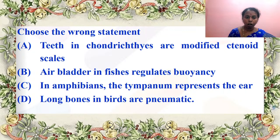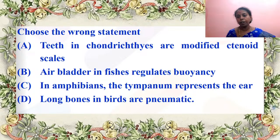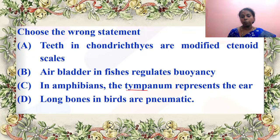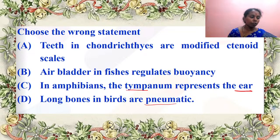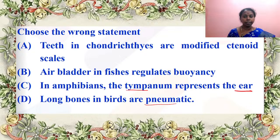Which among the following is a wrong statement? Teeth in Chondrichthyes are modified placoid scales — not tenoid scales. Air bladder in fishes regulates buoyancy. In amphibians, tympanum represents the ear. Long bones in birds are pneumatic. A is the wrong statement — teeth are modified into placoid scale, not tenoid scale. Excellent answer by Arini Shri.